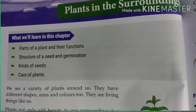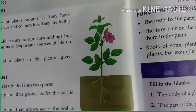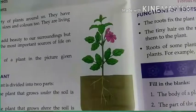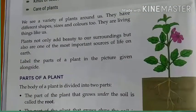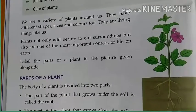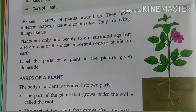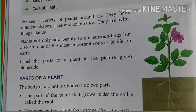Let's start the chapter. You must see this beautiful picture — here is a small plant with a flower, bird, leaves, root, and stem. We see a variety of plants around us. They have different shapes, sizes, and colors. They are living things like us. Trees are big plants while grass is a small plant, and rose plants are bushes.